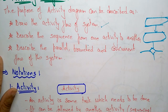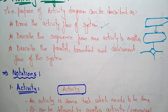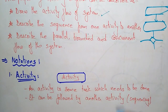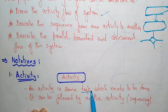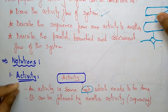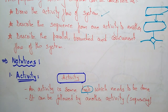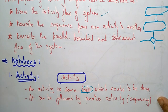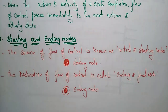Now coming to different notations present in an activity diagram. The first is the activity notation. An activity is some task which needs to be done — whatever activity you are doing has to be completed before you can move to the next activity. For example, whenever I complete explaining this point, I can move into the second notation. An activity can be followed by another activity in sequence.